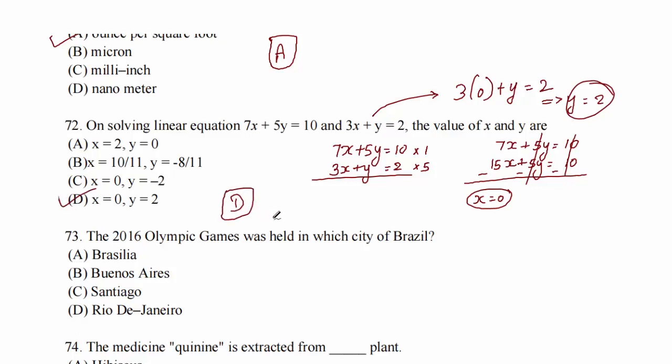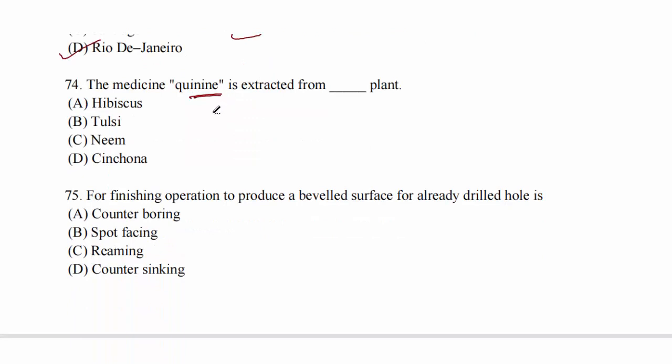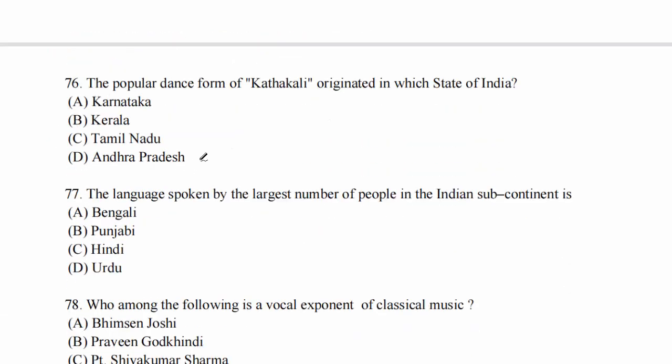Question 73: the 2016 Olympic Games was held in which city of Brazil? Rio de Janeiro. Option D. Question 74: the medicine quinine is extracted from cinchona plant. It is used to cure malaria. Option D. Question 75: for finishing operation to produce a bevel surface for an already drilled hole, we use countersinking. Option D.